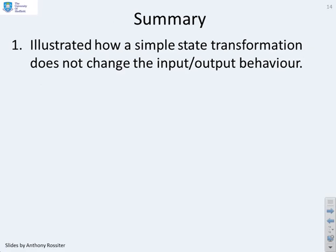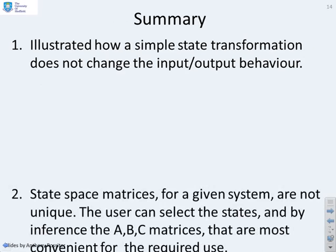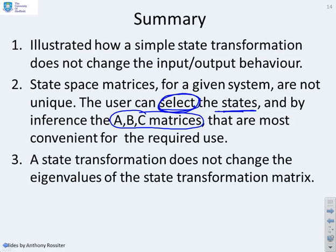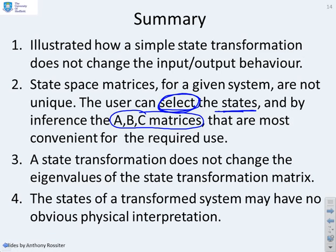In summary, we've illustrated how a simple state transformation does not change the input-output behaviour. State-space matrices for a given system are not unique. The user can select the states, and by inference the A, B, C matrices that are most convenient for the required use. A state transformation does not change the eigenvalues of the state transformation matrix. The states of a transformed system may have no obvious physical interpretation.